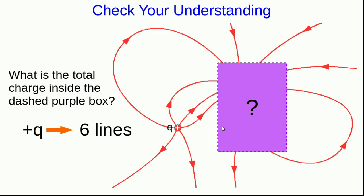Well, now we have to count the total number of lines passing through this surface, remembering that we have to add the number of lines out to negative the number of lines in.